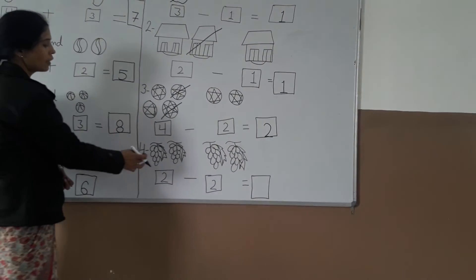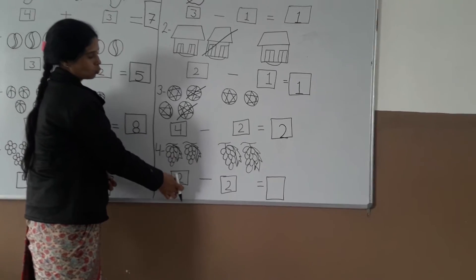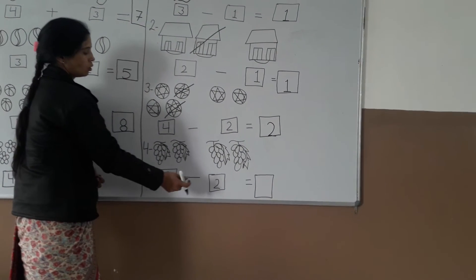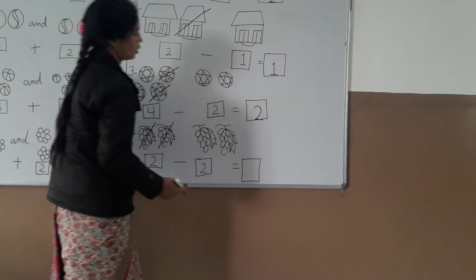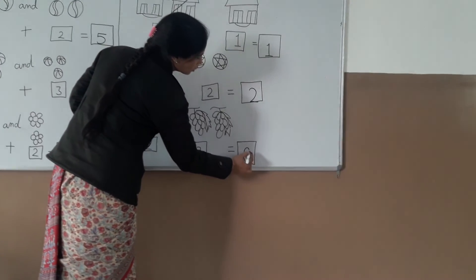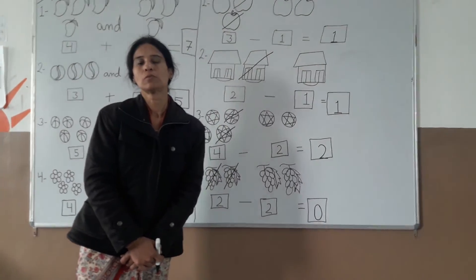Next is grapes. One, two. Two. Minus: one, two. Two. Cross them out: one, two. No grapes left. Zero. Thank you all students.